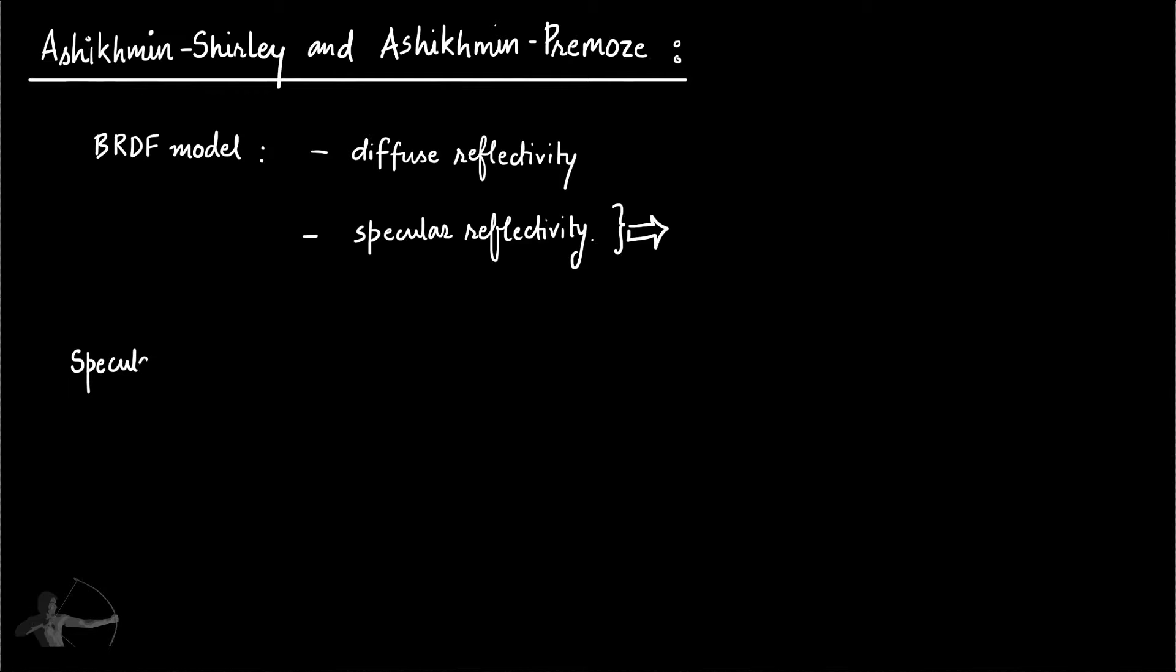So specular reflection or specular reflectivity is equals to nu plus 1 multiplied by nv plus 1 square root. So this is not the complete equation. But before writing the complete equation, we will start understanding what does each element of this equation mean.